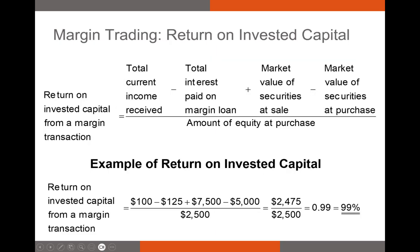Now let's talk about how we calculate the return on a margin account. The formula takes the total current income received minus the amount paid on the margin loan — because you'll always be paying interest on a margin loan — plus the market value of the securities at sale minus the market value at purchase, and then we divide by the equity at purchase, not the total value of the assets.